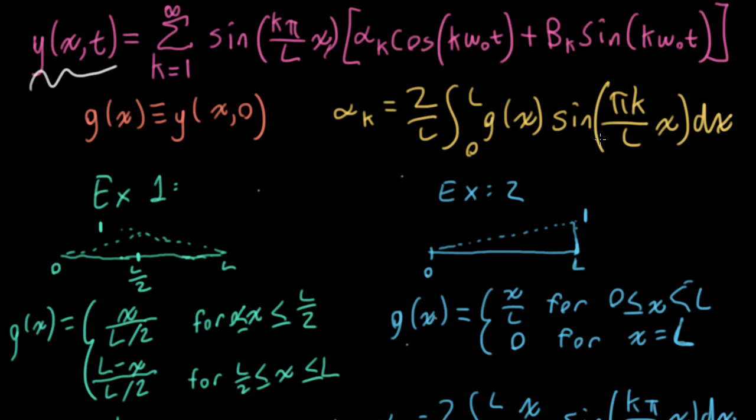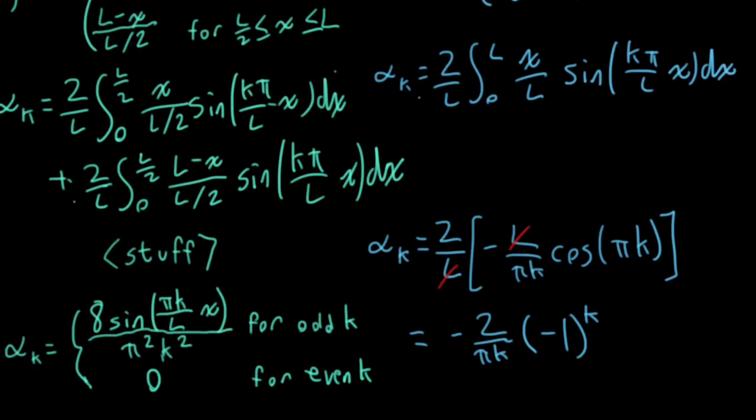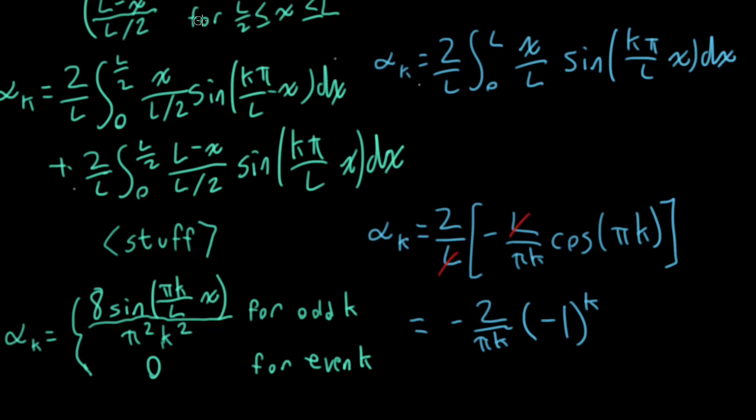The other correction I need to make is that down here where we computed the Fourier series coefficients for the triangular initial condition, there's no x here. It would not make any sense for this to be a function of x as it is a function of k.